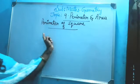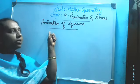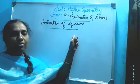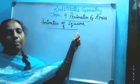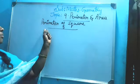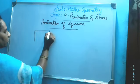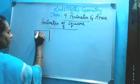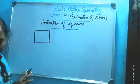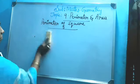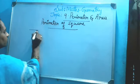Next, perimeter of square. First one we learned: perimeter of rectangle formula is 2L plus 2B. Here, perimeter of square - see, it is a square. A square has all sides equal.